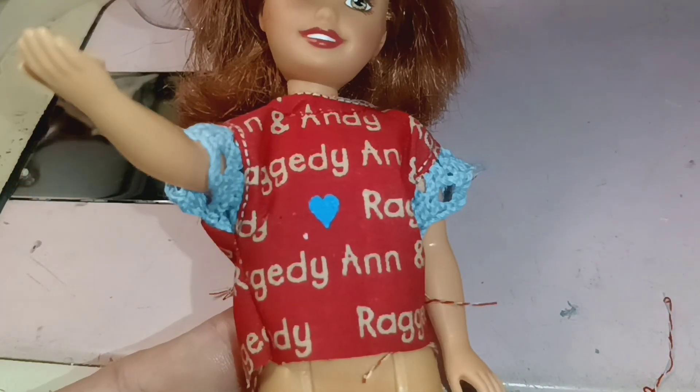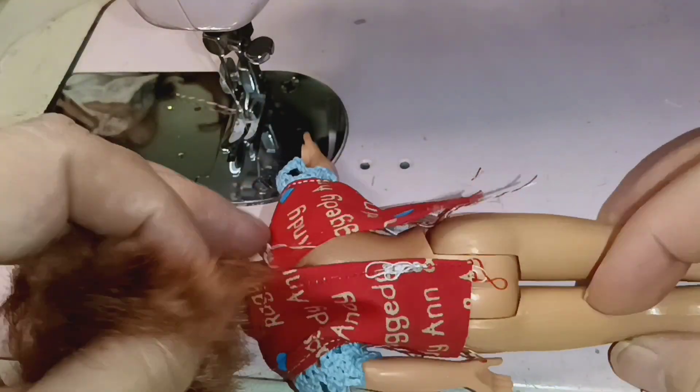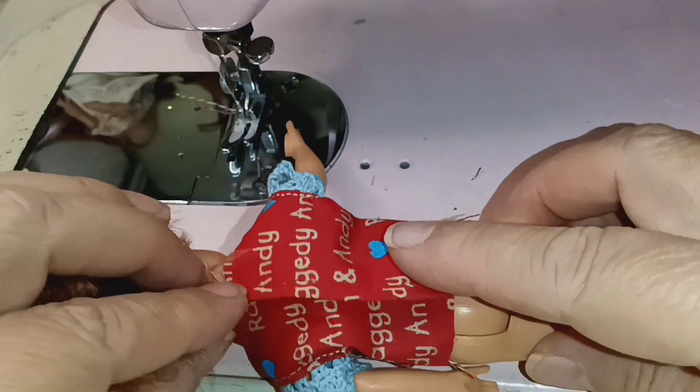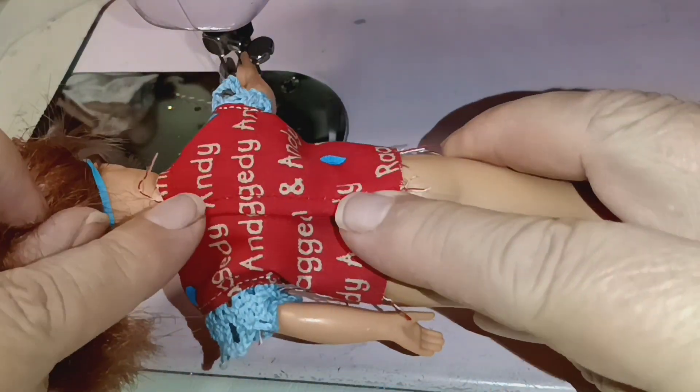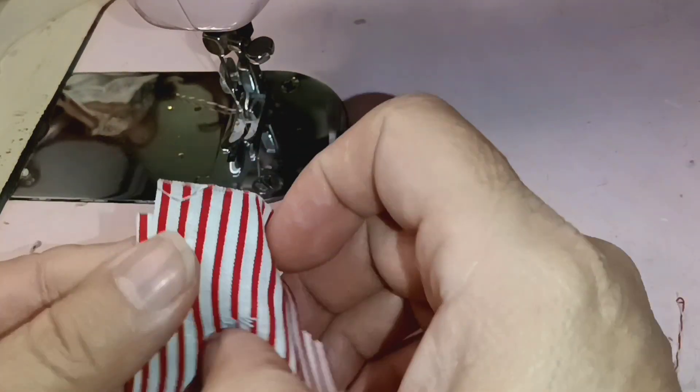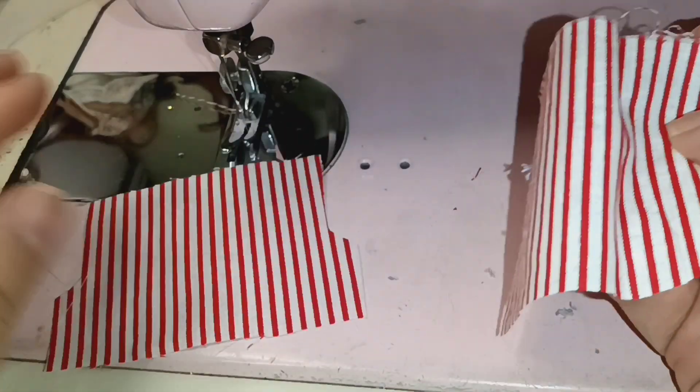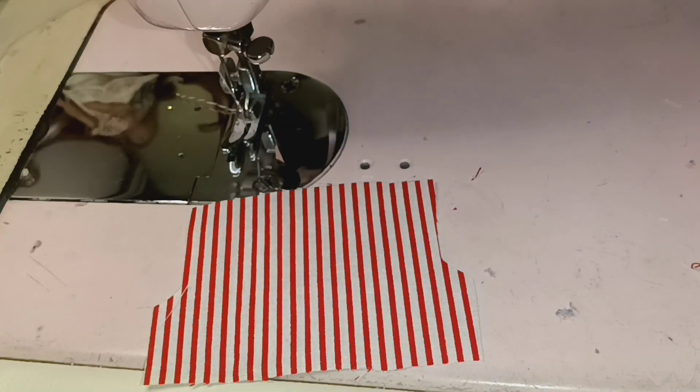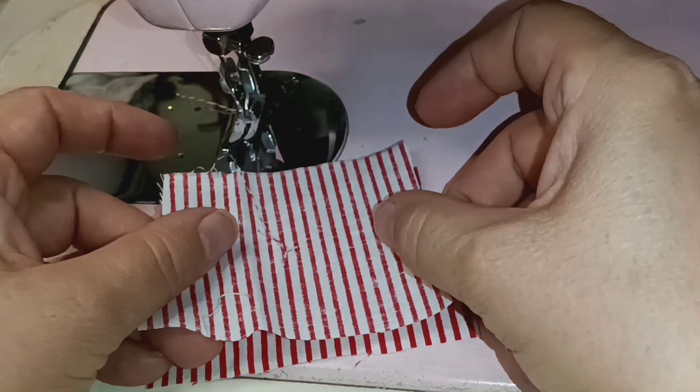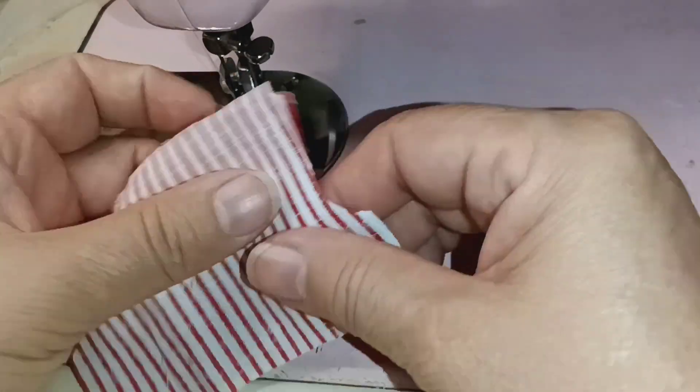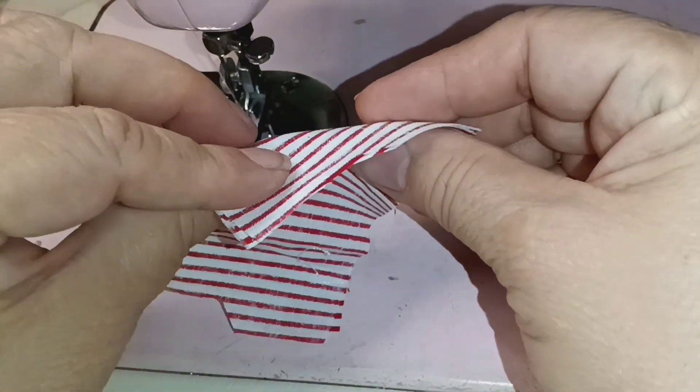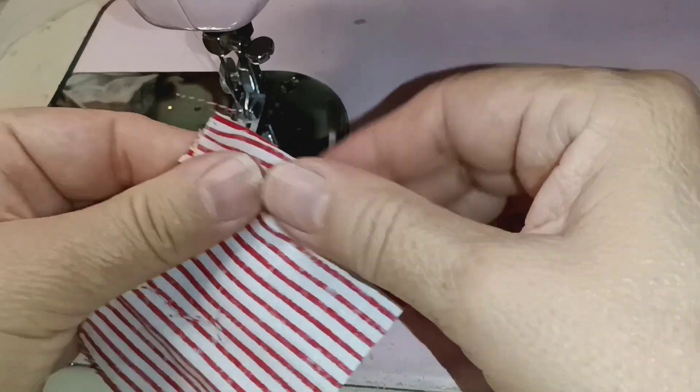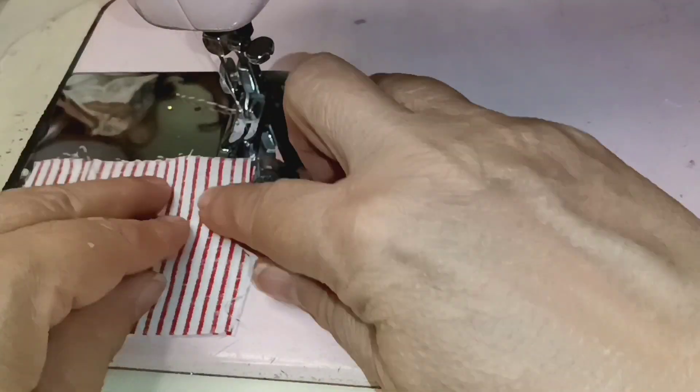Now for the shorts. These are the shorts, we're going to fold the outside part of the fabric or the right side, the correct side, and put them side by side. They're equal so it doesn't matter where we start.